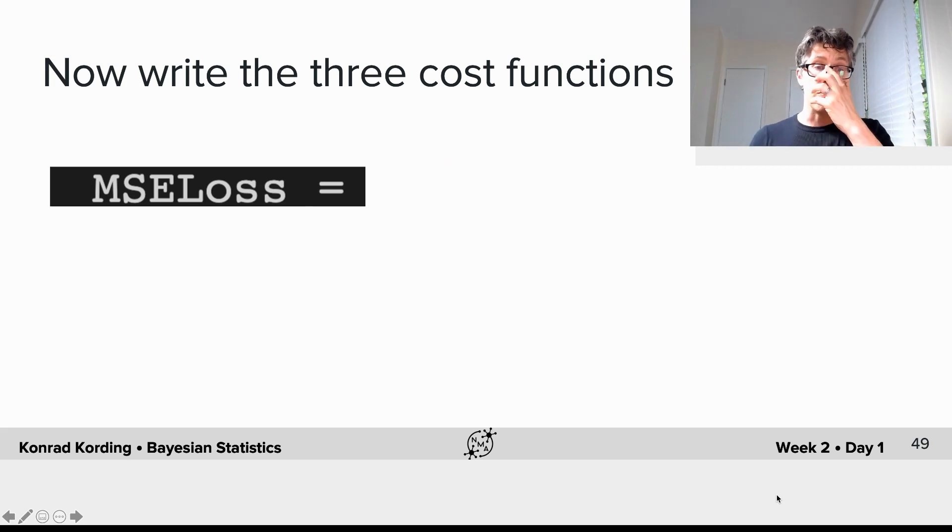What you will now do is implement the various loss functions: mean squared error loss, absolute error loss, zero-one loss, and so on. Then we will explore what's the best estimate for all of them. Please write the cost functions and visualize them.